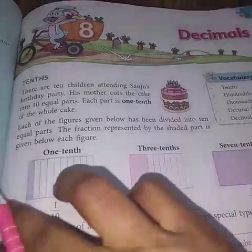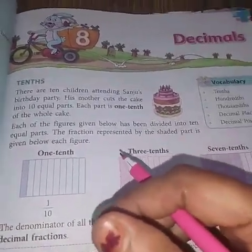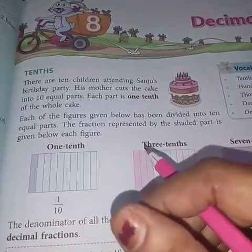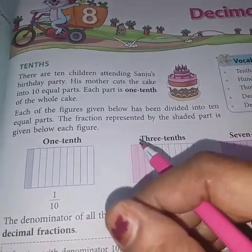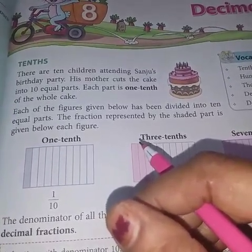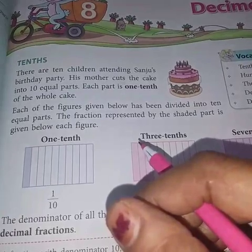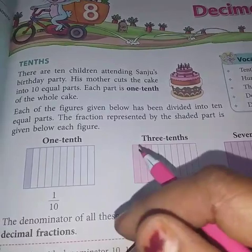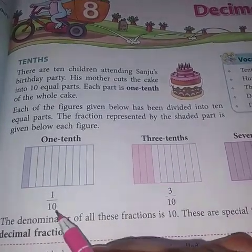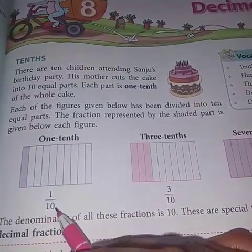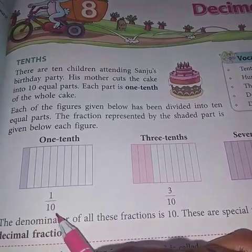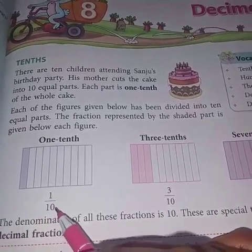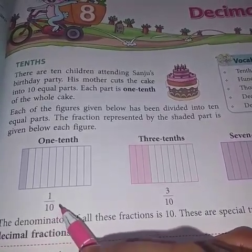What do you mean by decimals? Decimals are special type of fractions. Fractions we have done, just like 4 by 6, 2 by 4, 1 by 2. All these are called fractions. And when we have 10 as denominator, 10, 100, 1000 as denominator, then these are called decimal numbers or we can say decimals only.